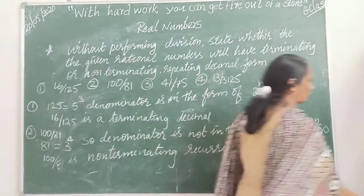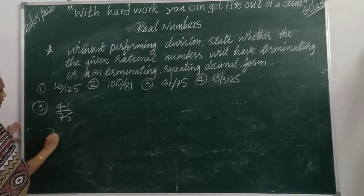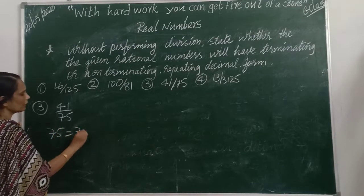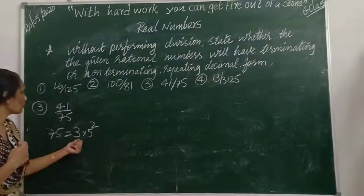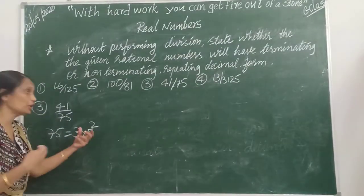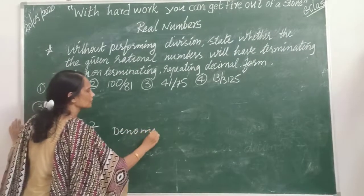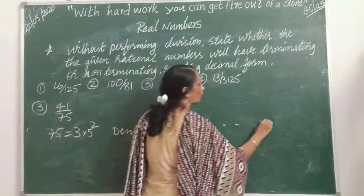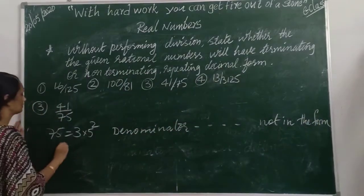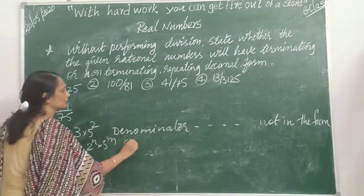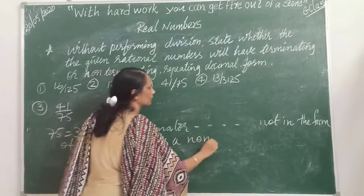Let us see the next question: 41 by 75. We know that 75 equals 3 into 5 squared. There is a 5^N part, but where is the 2^N part? There is only 3. So is it in the form of 2^N × 5^N? No. The denominator is not in the form of 2^N × 5^M. Therefore 41 by 75 is a non-terminating recurring decimal.